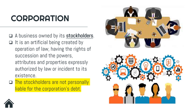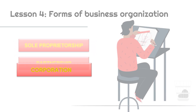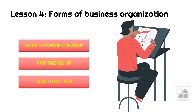The stockholders are not personally liable for the corporation's debts. Since the corporation is a separate artificial being, it is the corporation itself that is liable for its debts — that liability cannot be extended to the stockholders. To summarize: under forms of business organization, we have sole proprietorship, owned and operated by only one person; partnership, owned by two or more persons; and corporation, which is a separate artificial being. To become a stockholder of a corporation, you need to acquire stocks or shares of that corporation.